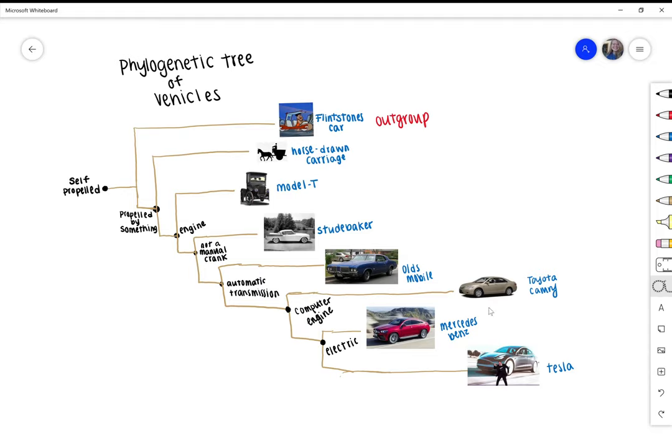The most common ancestor of the Toyota, Mercedes, and Tesla would be having a computer engine.